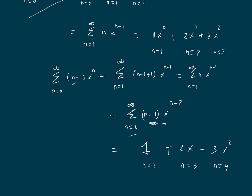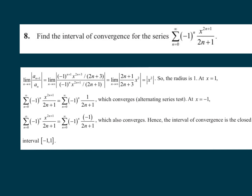The next problem asks: find the interval of convergence of summation of (-1)^n · x^(n+1) / (2n+1). This looks similar to the sine series but is not, since the sine series has (2n+1)! in the denominator. To find the interval of convergence, apply the ratio test with a_(n+1)/a_n. The result is that this power series converges on the closed interval [-1, 1].